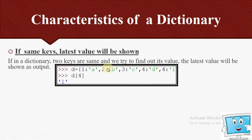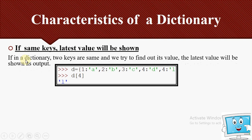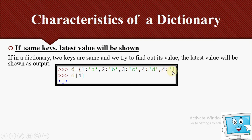The next characteristic: if the same key appears more than once, the latest value will be shown. If a dictionary has two entries with the same key — for example key 4 with values D and L — when you check D[4], the output will be the most recently assigned value, which is L.